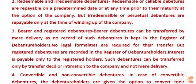Come to the third point: bearer and registered debentures. Bearer debentures are those which are not registered. Bearer debentures can be transferred by mere delivery, as no record of such debentures is kept in the register of debenture holders. So if I want to transfer my debentures to someone else, I can easily do so because the debenture holders are not registered anywhere — no legal formalities are required for their transfer. But registered debentures are recorded in the register of debenture holders; interest is payable only to the registered holders.